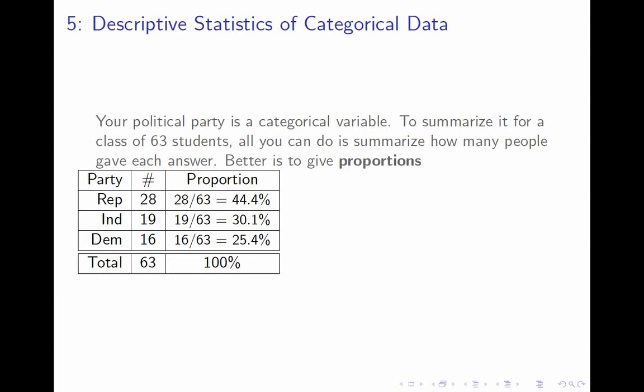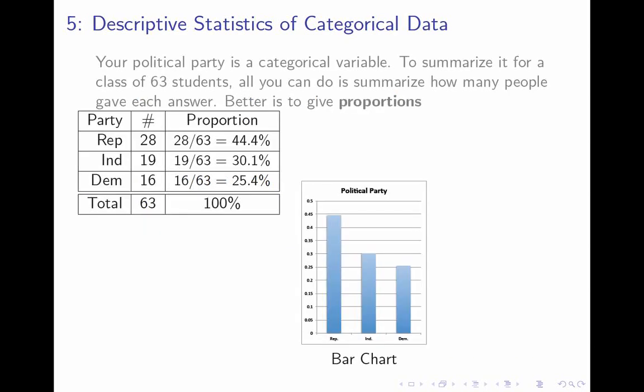That's pretty much all there is to say about one categorical variable, and there are two common ways to represent this information visually, which are both pretty straightforward. One is a bar chart. In a bar chart, you put the values of the variable along the x-axis. They don't come in a particular order, so you do whatever order seems convenient. So I have Republican, Independent, and Democrat. And then above each of these, you put a bar which is proportional to the number or the proportion.